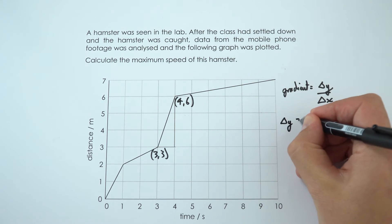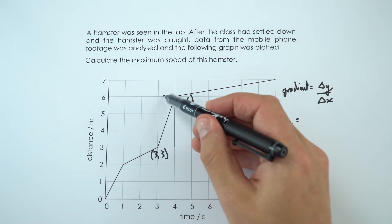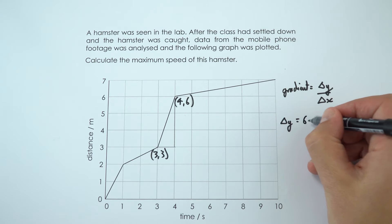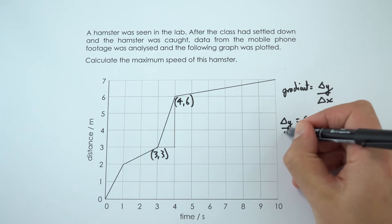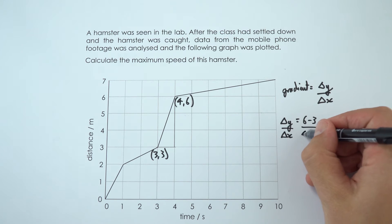That means my change in y value is going to be equal to 6 take away 3, divided by my change in x value, which is equal to 4 take away 3.